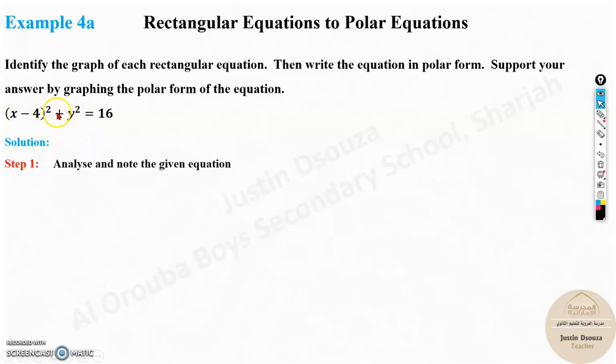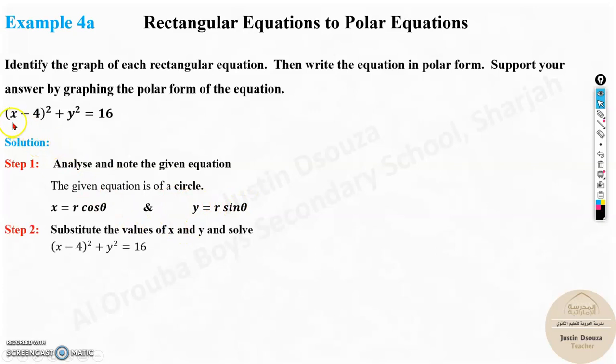You have been given this equation (x - 4)² + y² = 16. Let's recall the conversion formulas which you used in the previous videos. The given equation is of circle, but what do we convert? Here, x is r cos theta, y is r sine theta. Let's substitute this. Instead of x, put r cos theta. Instead of y, put r sine theta, and substitute and simplify it.